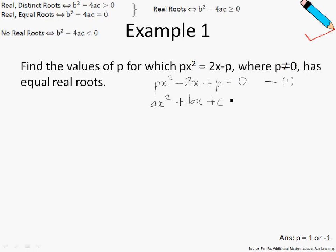Let me write down the fundamental equation so we can easily identify our a, b, and c. Staring at equation number 1 and equation number 2, by comparing coefficients, we can identify that a equals p, b equals negative 2, and c also equals p.